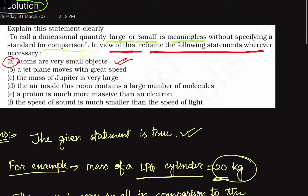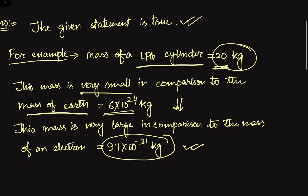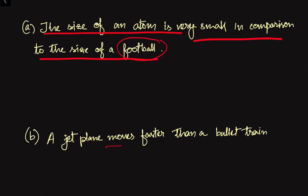Now let us see our second statement. We are given that a jet plane moves with great speed. We have to give some reference standard in comparison to which the jet plane moves at a greater speed. We can rewrite this as: a jet plane moves faster than a bullet train. A bullet train's speed is suppose 400 km per hour, but a jet plane moves at a speed of almost 1.2 Mach, or greater than 1,000 km per hour. So if we compare the jet plane's speed with a bullet train, then it is faster in comparison to the bullet train.